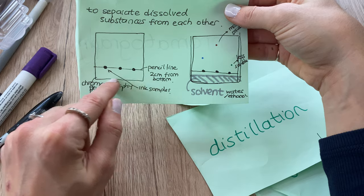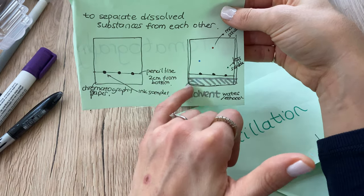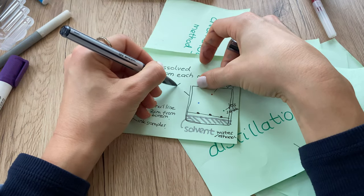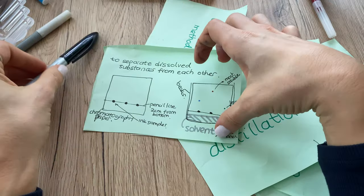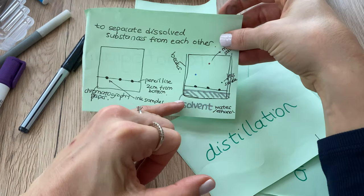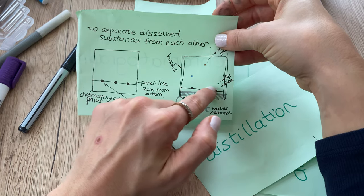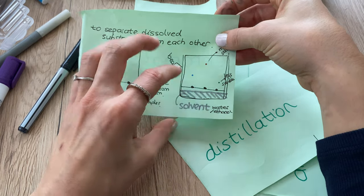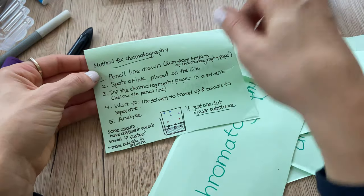The pencil line needs to be 2 cm from the bottom of the page. This is because when I add it into a beaker, I forgot to write a beaker here, when I add it into a beaker and I add my solvent which could be either water or ethanol, the solvent must not touch the pencil line, otherwise I'm going to ruin my chromatography practical.